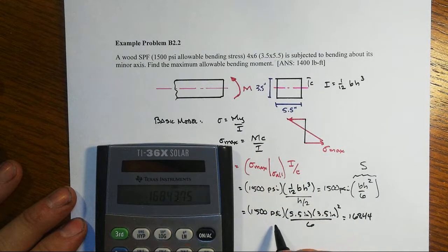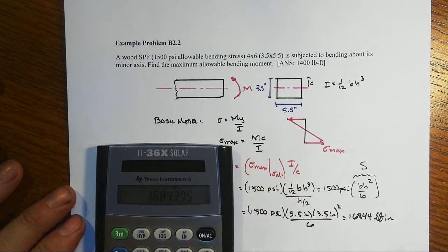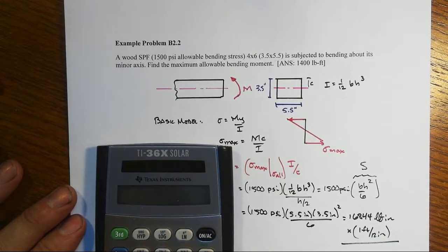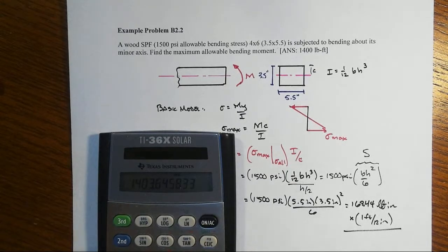Check it out: pounds per square inch times inch cubed is pound-inches. So to get that into pound-feet, we'll divide by 12 inches per foot. When we do that, we get down to around the 1400.